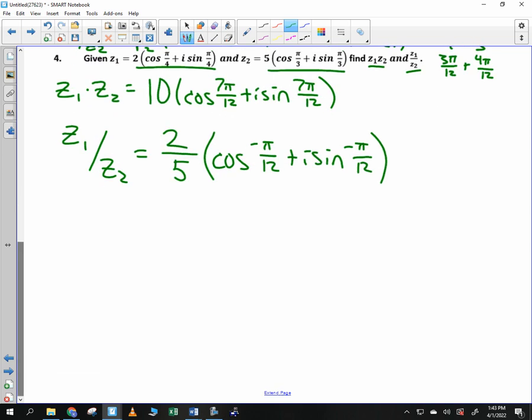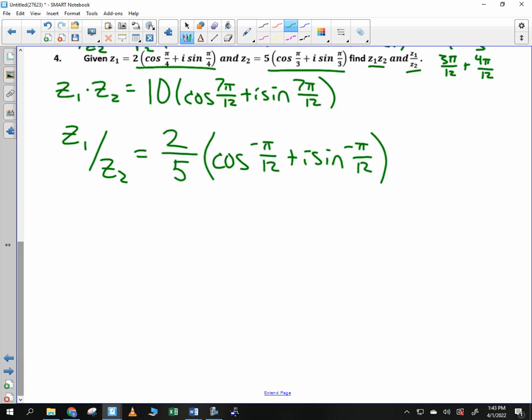Negative pi over 12 plus i sine of negative pi over 12. You cannot do that. You can't leave the negative of an angle. Who remembers what happens to the cosine of a negative angle? So we have two over five cosine of pi over 12. And as you guys said, good job, Morgan. Minus i sine of pi over 12.